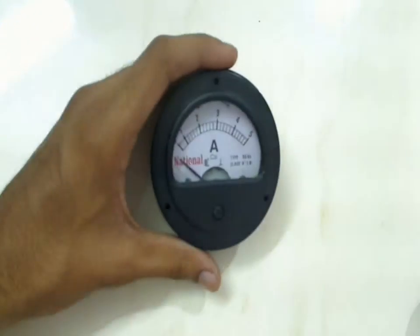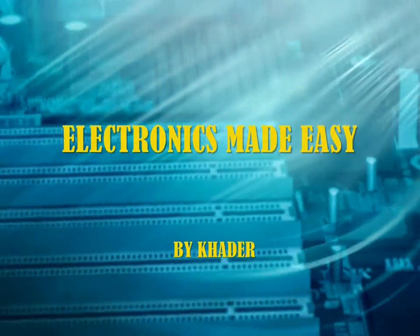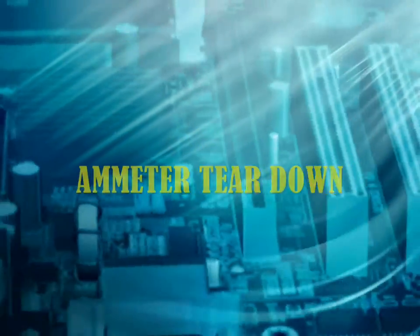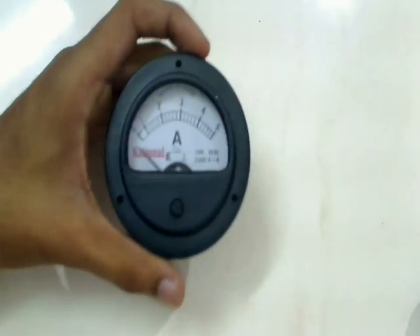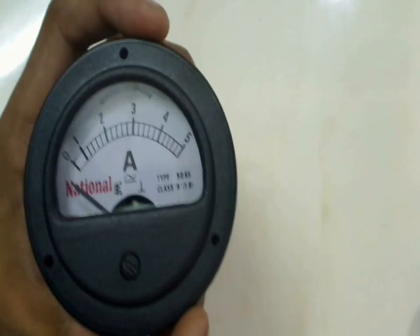So today we are going to open this ammeter and see what's inside. An ammeter is a device which is used to measure the current going to a load. Usually these ammeters are connected in series.